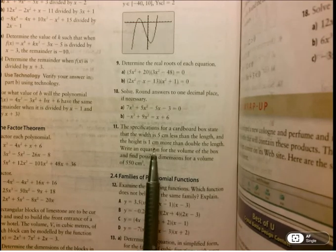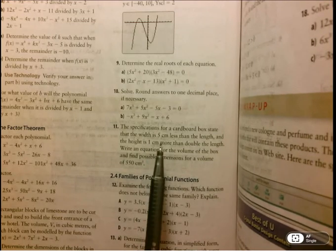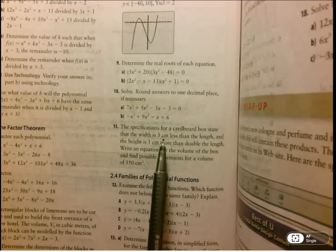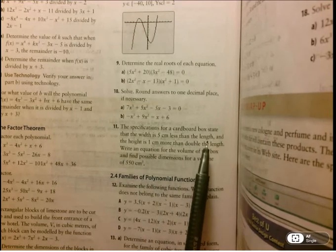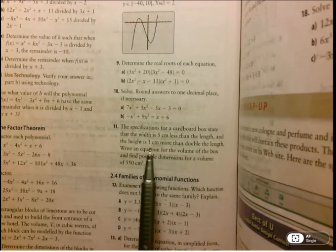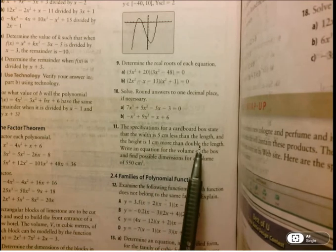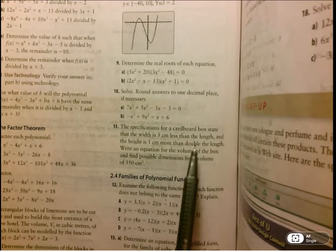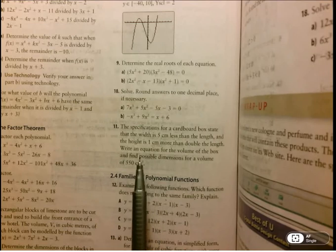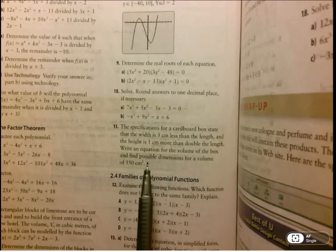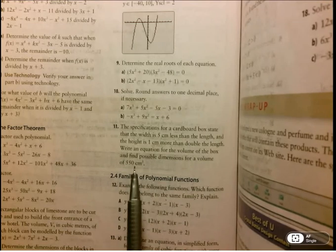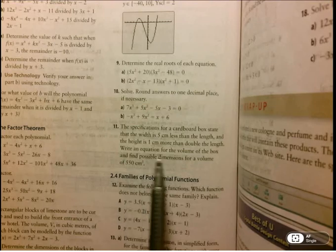So we're making a box, and we notice that the dimensions seem to all be given with respect to length. So width is 5 centimeters less than the length, and then the height is 1 centimeter more than double the length. So everything can be given with respect to length, and they want us to find possible dimensions for a volume of 550 and an equation for the volume.